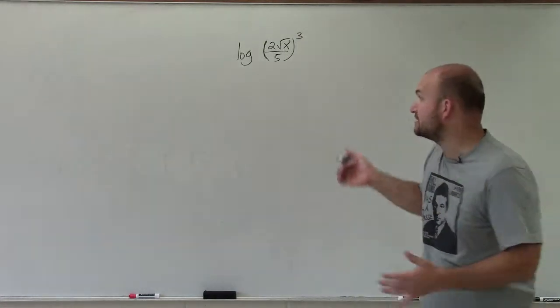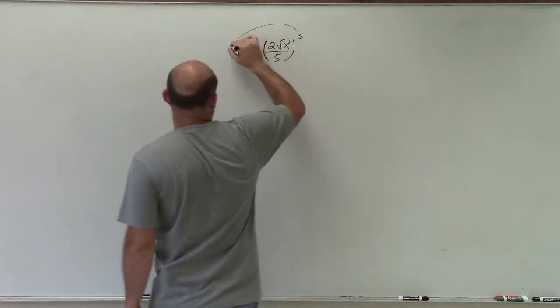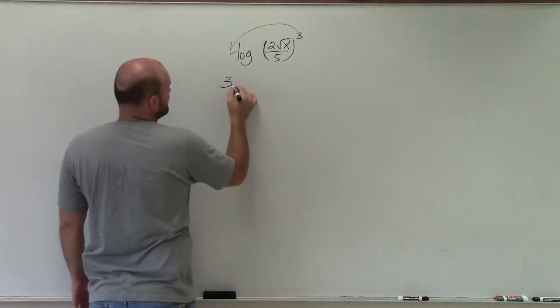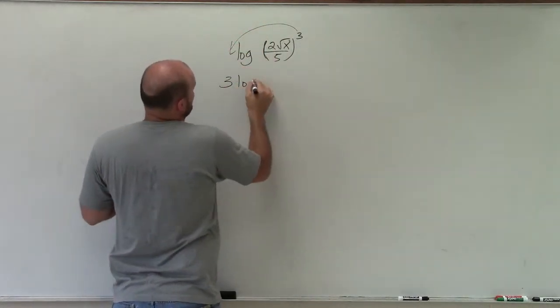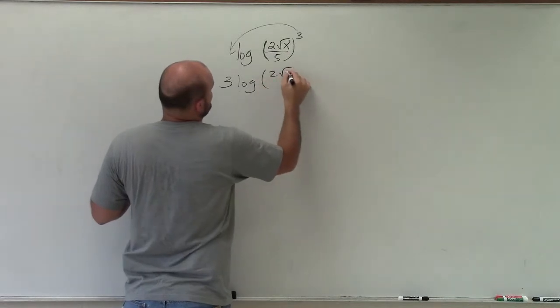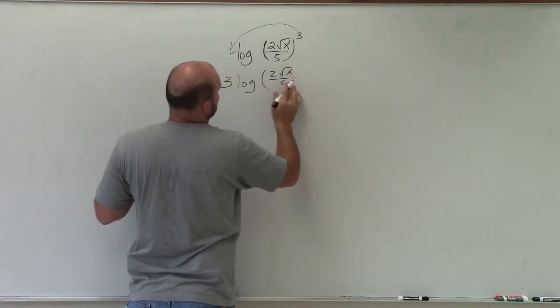I want to be able to put that out in front. I'm going to take the exponent, using my property of logarithms, and write that in front. So I have 3 log 2 square root of x divided by 5.